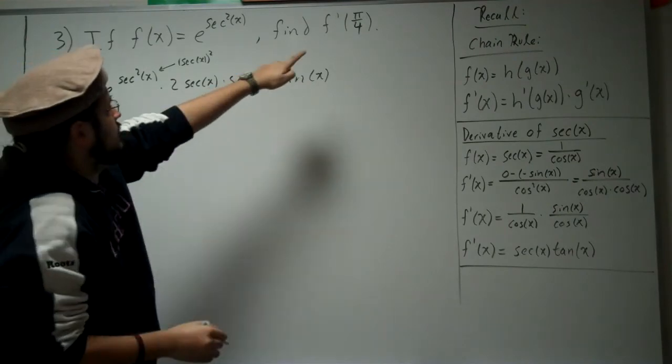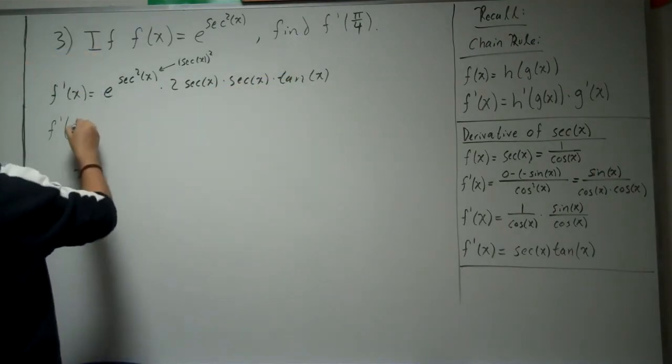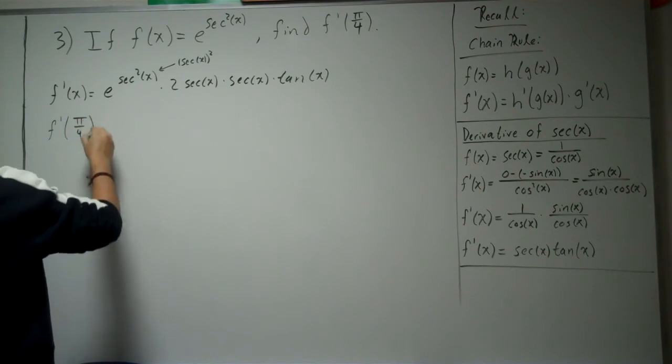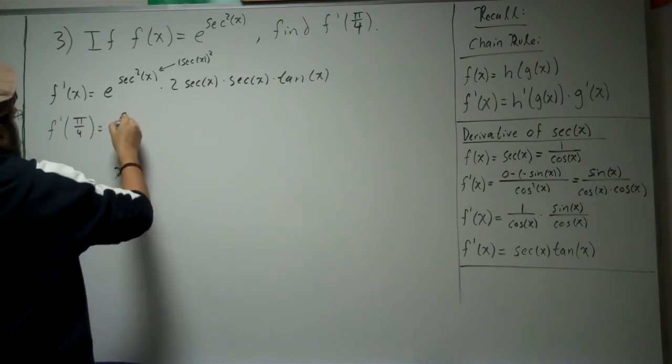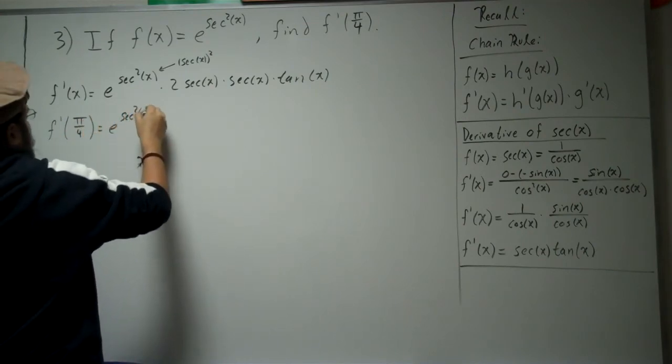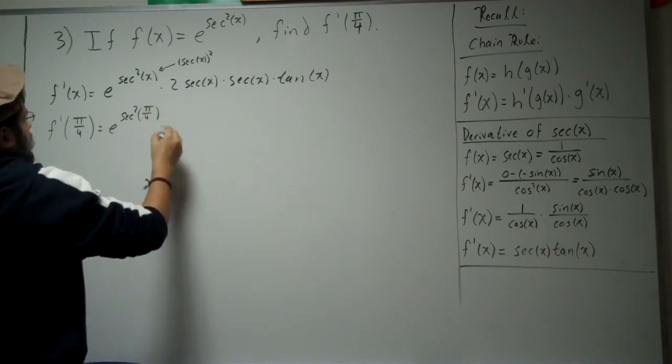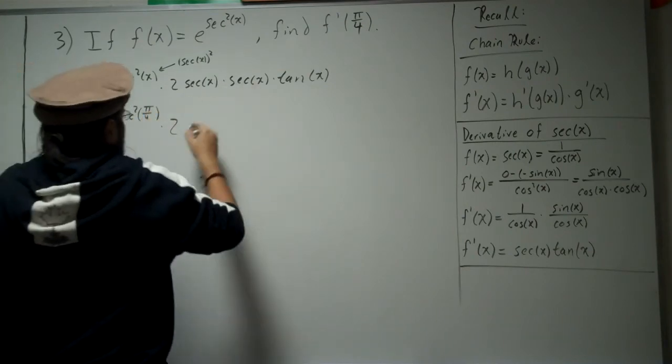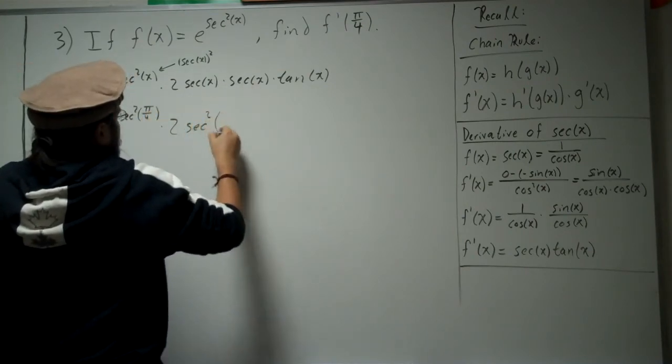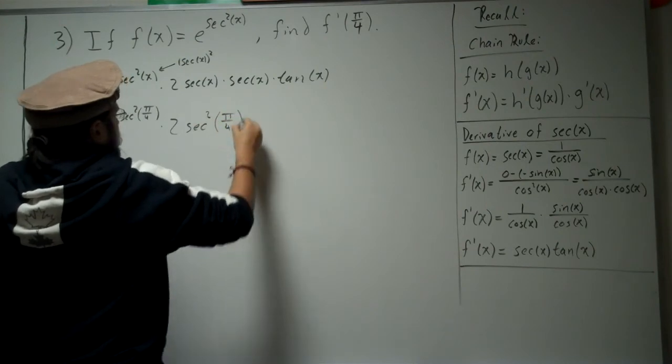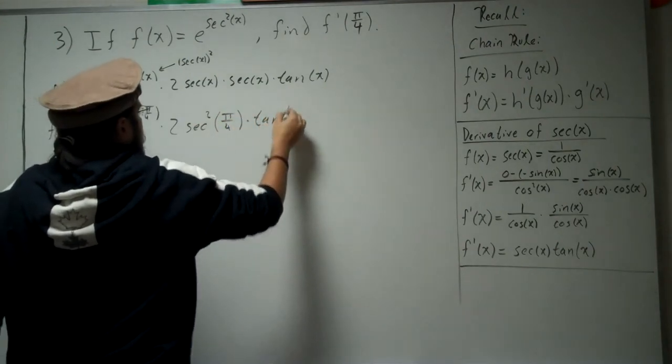We already have the derivative, so let's go ahead and just plug in pi over 4. Okay, so that's e to the secant squared of pi over 4, times 2 secant of pi over 4,